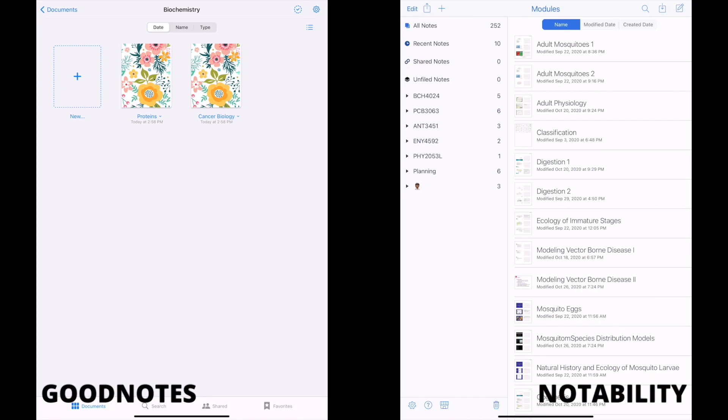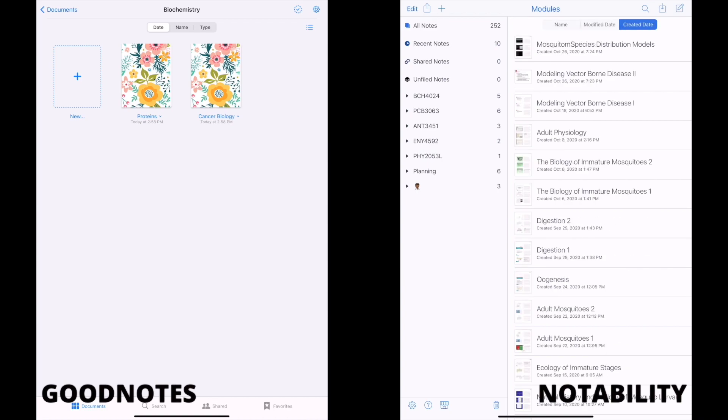It's also important to note that both apps give you different options on how to sort your notes. In Notability, you can sort by name, date modified, or date created. On the other hand, GoodNotes allows you to sort by name, date modified, or the type, meaning notebook, image, etc.